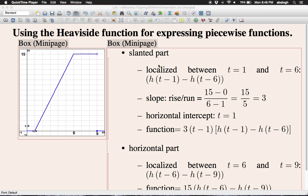The slanted part goes between 1 and 6 over the horizontal line. We can say it's localized between t = 1 and t = 6. That means the Heaviside function will look like h(t-1) - h(t-6). This difference of two Heaviside functions localizes this part between 1 and 6.